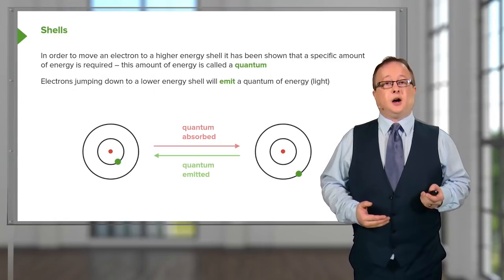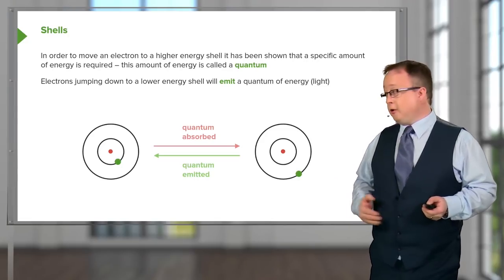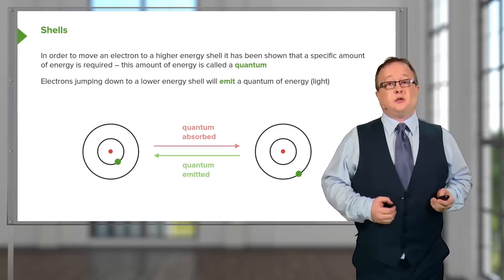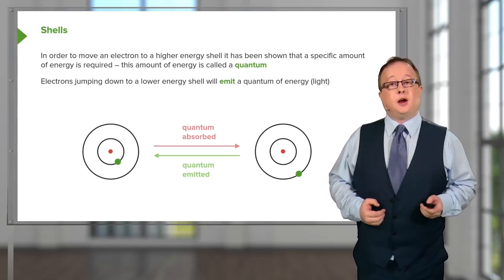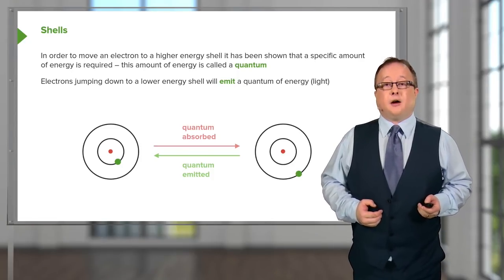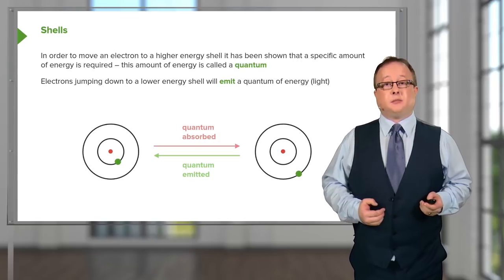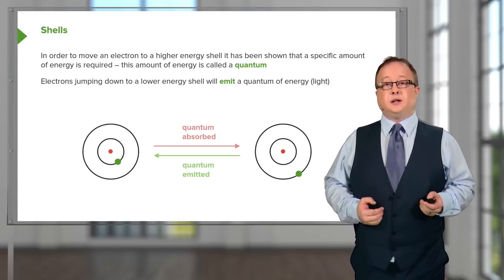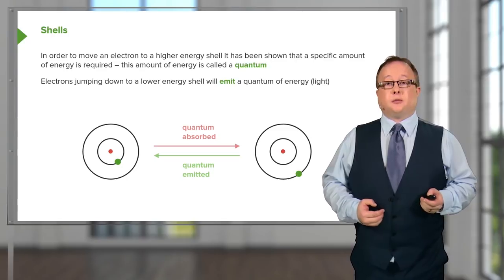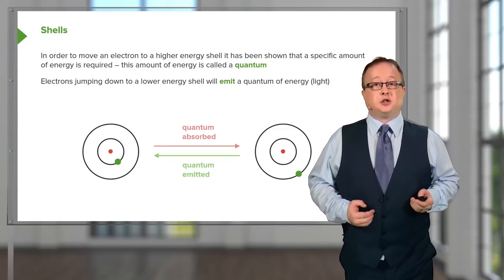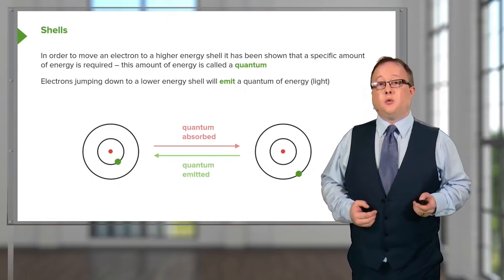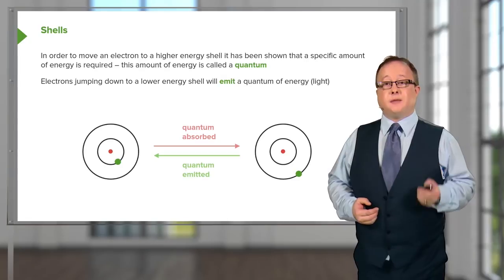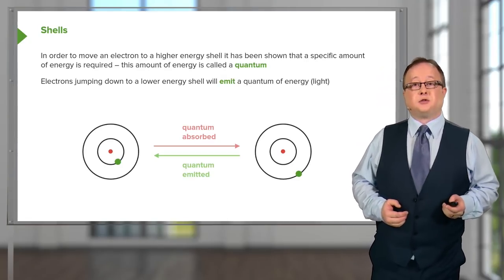In our idealized atom shown on the board, we see movement of an electron from a shell nearest the nucleus to a shell further from the nucleus when a quantum of energy is absorbed. This energy can be light energy or theoretically heat energy. When an electron moves back from its outer shell — shown here with the green line — back to the shell nearest the nucleus, we see a quantum of energy emitted, usually as a photon of light.